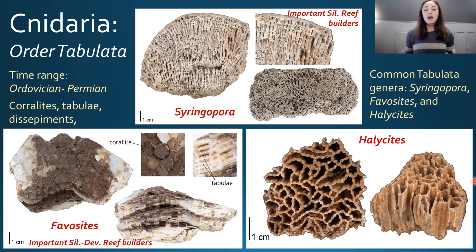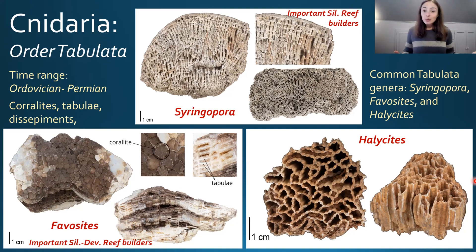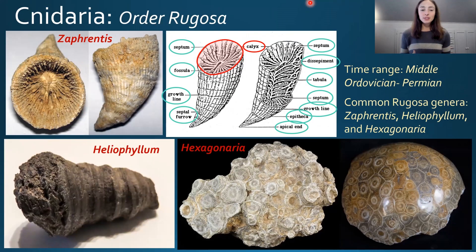The three main genera of tabulate corals shown here are: Syringopora on the top, which looks like a bunch of straws held together and was an important reef builder in the Silurian; Favosites on the bottom left, which was an important reef builder from the Silurian to the Devonian; and Halysites on the bottom right, which was never dominant in reef building but was very widespread and abundant.